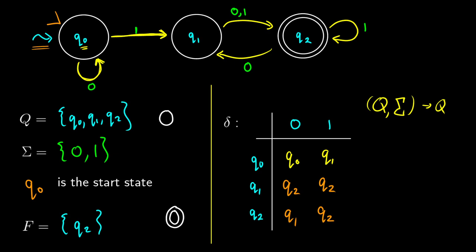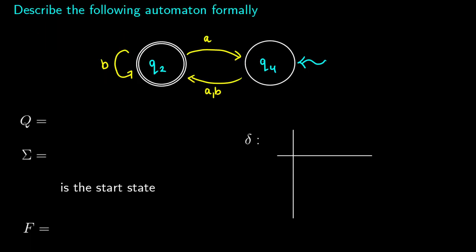So what does this finite state machine accept? It likes at least two 1s: it needs one 1 to get to Q1, another 1 to get to Q2, and then it wants to end in a 1 as well, because if you give it a 0 it goes back to Q1. So basically this is a machine that needs at least two 1s and must also end in a 1. Whether that's useful depends on what we're trying to build — that's an example of something you can do. Let's do a couple more.